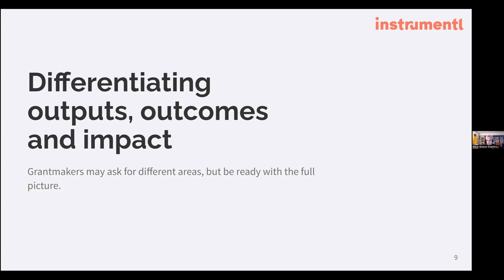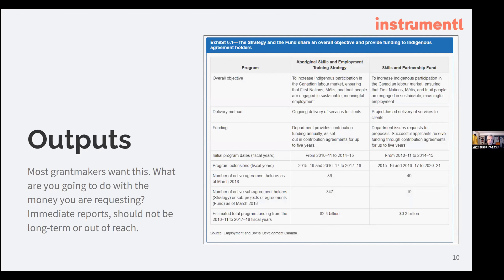I want to take one more moment on the logic model to differentiate outputs, outcomes, and impact — because mostly what I see when I look at notices of funding availability or requests for proposals, an awful lot of the language is really talking about outputs. They want to know how many of a thing you're going to do in a funded period. I pulled a quick example: 86 active agreement stakeholders, 49 in the partnership fund, estimated total program participations. This is what I see most often. It's not that funders don't want to look at outcomes, but we see this as one component of the full logic model story.